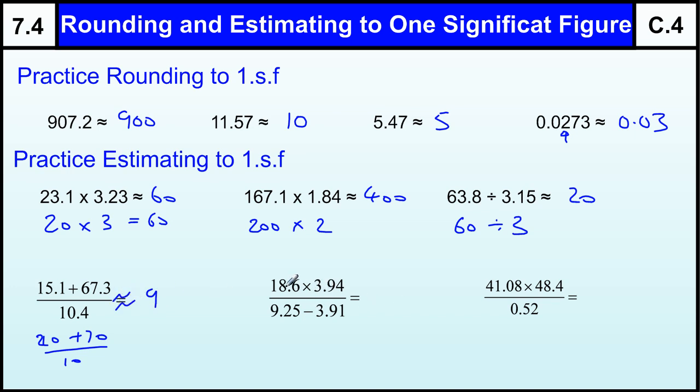And then we've got twenty times by four over nine minus four, which is five. So we've got eighty over five, which is going to be sixteen.